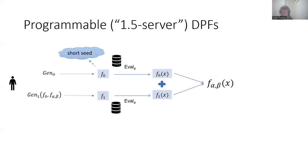And it is essentially the same as a DPF, except that the first key, which we also refer to as the offline key, is just a short random seed, and hence can be generated independently of the point function. In fact, this notion implies a little stronger notion of reusable DPF, where the offline key, this short random seed, can be used over multiple instances.